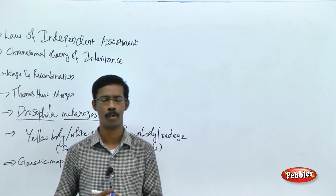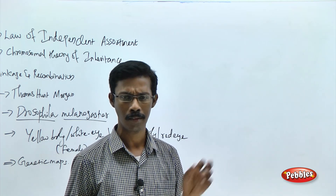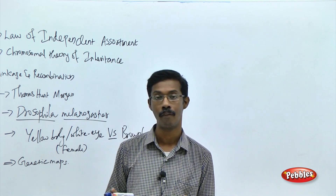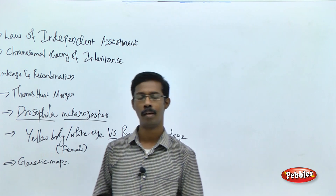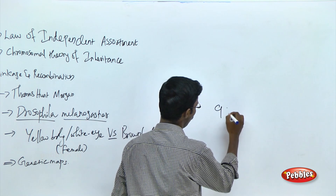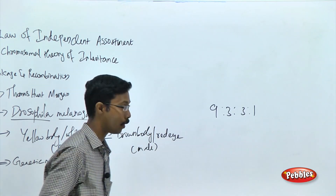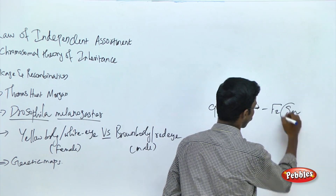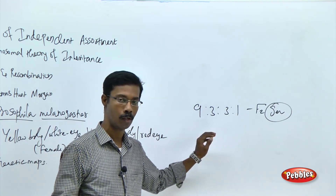We have seen something about the dihybrid crosses — crossing between 2 parental plants differing in 2 major characters. In those dihybrid crosses, Mendel got the ratio of 9:3:3:1 in the F2 generation. This is what you have to remember, and from this we are going to continue today.